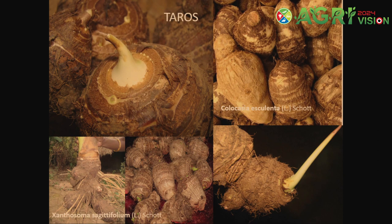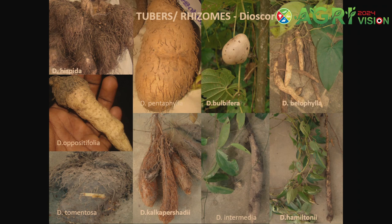We have 19 species of Alocasia found only in Arunachal Pradesh, and 29 species of different kinds of Dioscorea. Many of these species are edible in the traditional way and in the commercial way. This morning I was seeing at one of the stalls — the Tuber Research Institute — which displayed different kinds of Alocasia and Dioscorea. There is great scope for these wild species to be brought into cultivation, which could provide not only livelihood for local areas but also secure food security for this region.